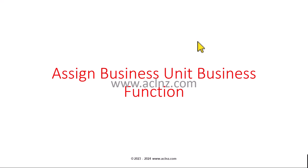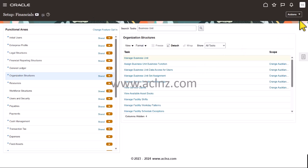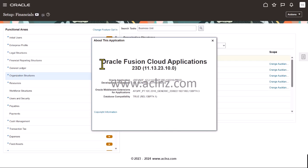We have just defined a business unit. The next step is to assign the functions associated with a business unit. While assigning the functions, you also need to choose a primary ledger and a legal entity to which this business unit is tied. Let's see that in Fusion Cloud.